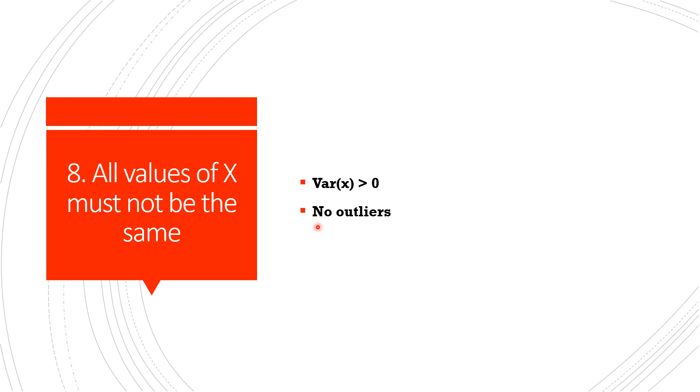For example, we have the x values in the range of 1 to 100, and suddenly we have 2 to 3 values which are in thousands or maybe in lakhs. Then these values can dominate the whole result. So firstly, there should be variability in x, or in short, the variables must vary, and secondly, outliers must not be there in the model.